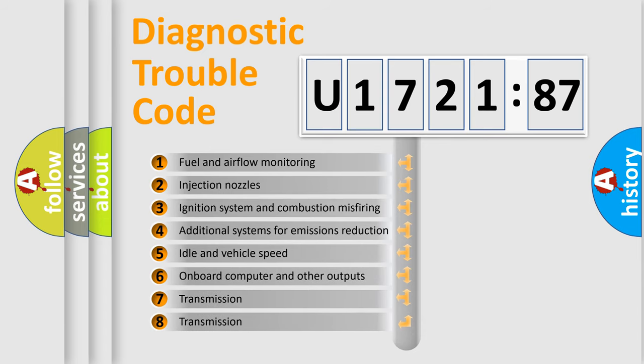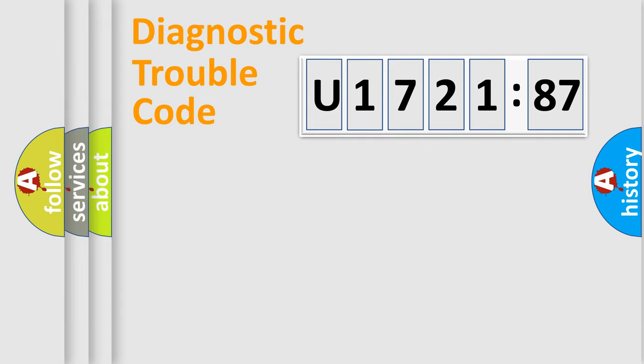The third character specifies a subset of errors. The distribution shown is valid only for the standardized DTC code. Only the last two characters define the specific fault of the group.